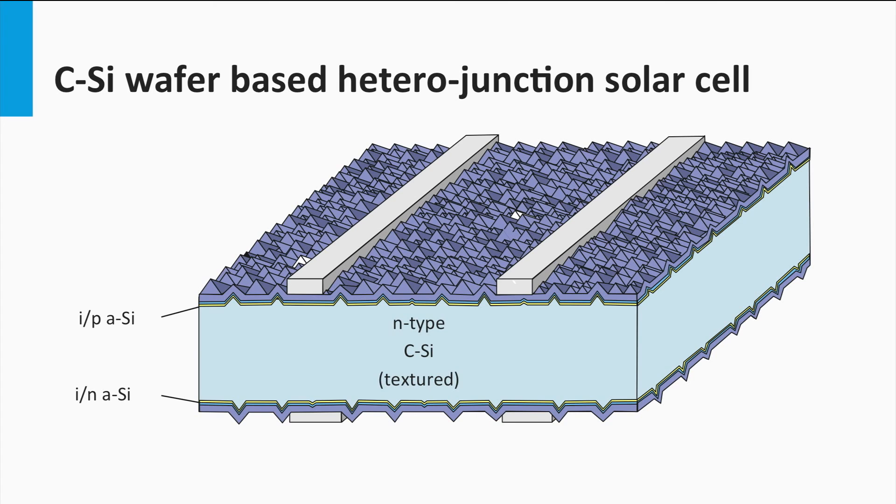Another important advantage of the HIT solar cell is that the amorphous silicon layers are deposited using cheap and straightforward plasma-enhanced chemical vapor deposition technology at low temperatures, not higher than 200 degrees Celsius.